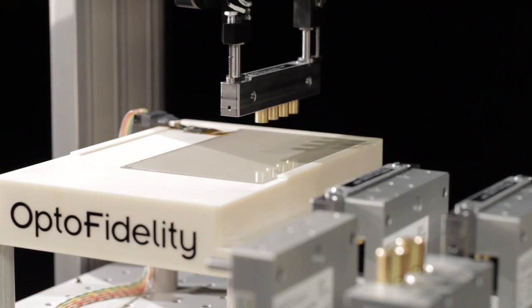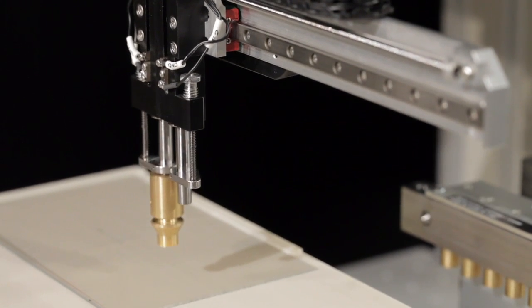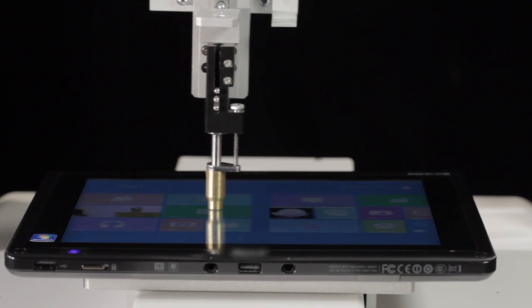OptoFidelity touch panel performance test system can be used to test both bare touch sensors or touch performance of touch-enabled devices such as smartphones and tablets.